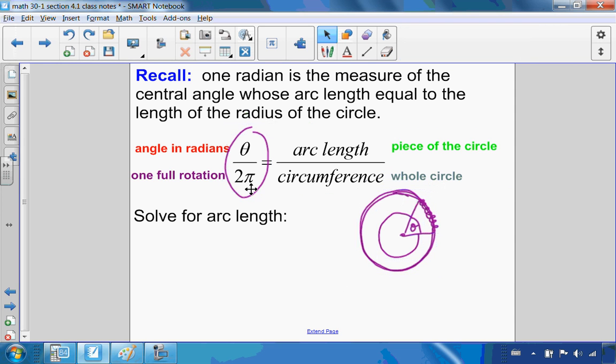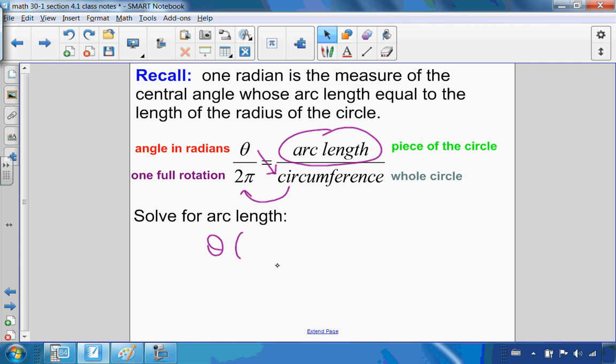Looking at this ratio, I want to solve for arc length. I'm going back to grade 8 proportions and just do cross multiply and divide. I'm going to take theta and multiply it by the circumference of a circle, which is 2πr, and then divide it by 2π.